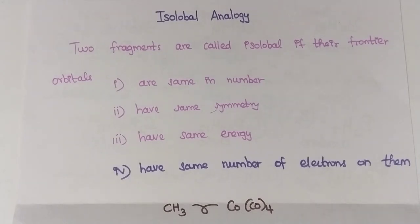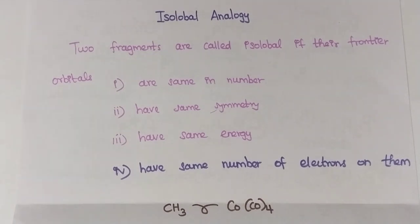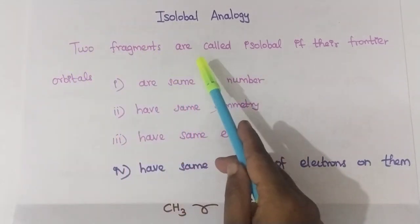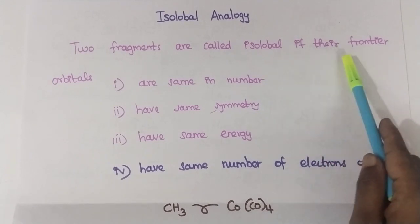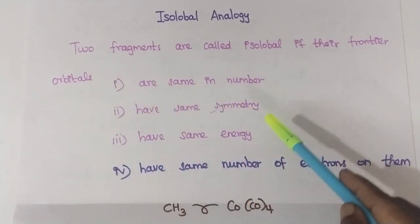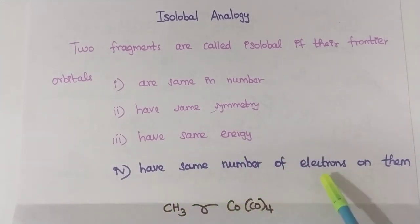Hello all! Today in this video we are going to see an interesting topic — isolobal analogy. In the previous video, while solving borane, I mentioned that isolobal analogy is very simple. Two fragments are called isolobal if their frontier orbitals are same in number, same symmetry, same energy, and have the same number of electrons.